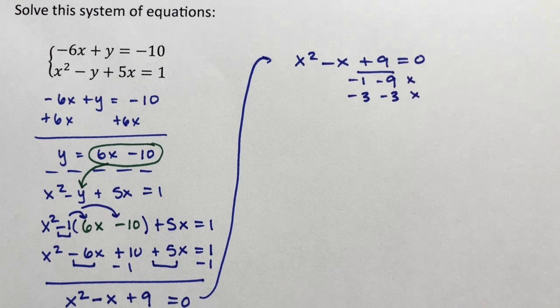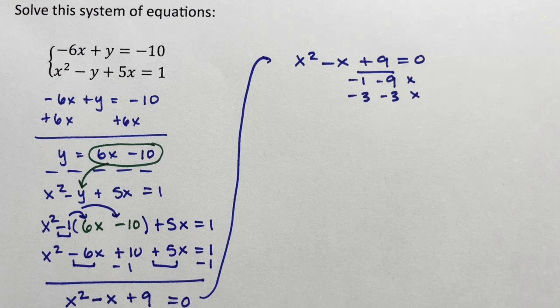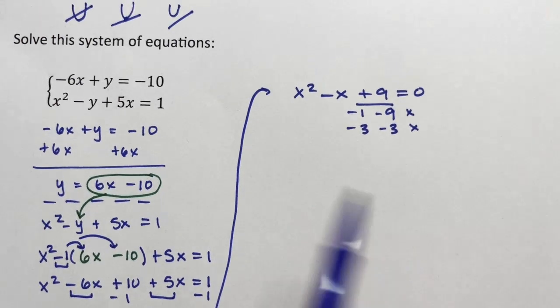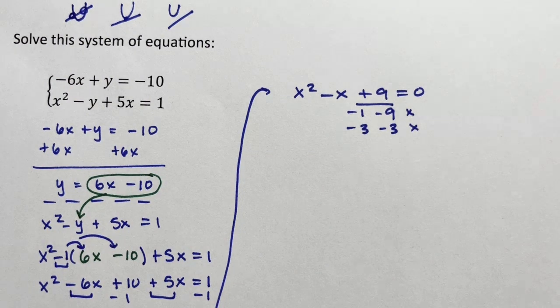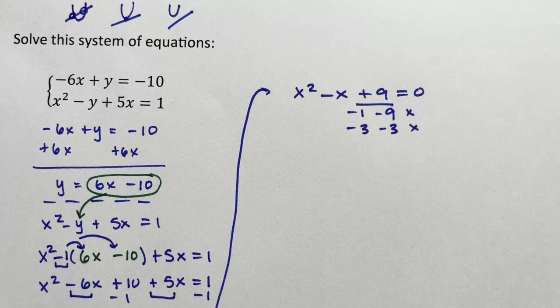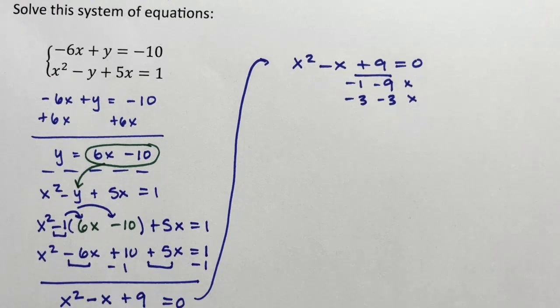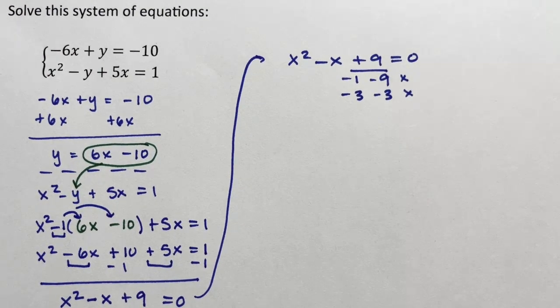So my first instinct is no solution. However, there's nothing that says that these two points, if they intersect at two points, there's nothing that says that they have to be pretty integers or pretty rationals. Fractions can be pretty. So what I need to do next is double check with the quadratic formula.